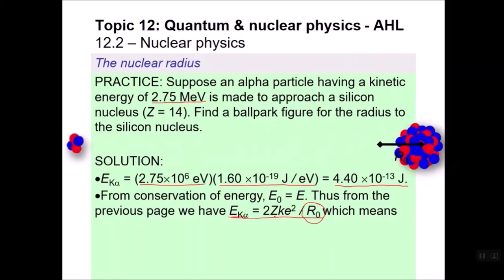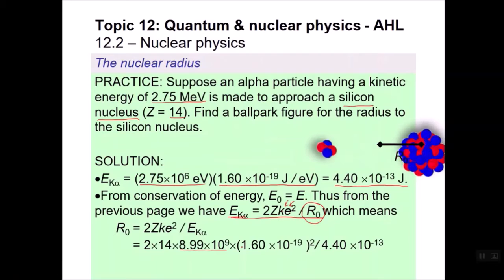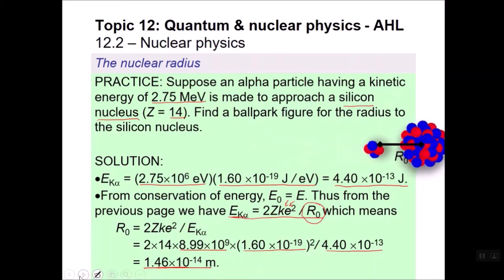We know that we are talking about a silicon nucleus, silicon nucleus that has 14 protons in it. So we can substitute in 14. This is a constant, this is a constant. This is Coulomb's constant charge. So we substitute those in: 2 times 14 times Coulomb's constant times the charge squared divided by the energy. And we get an estimated radius of that nucleus at 1.46 times 10 to the minus 14th meters. It's actually pretty straightforward. You just have to remember that all the kinetic energy is getting converted into the potential energy at this distance. And the rest is all constants.